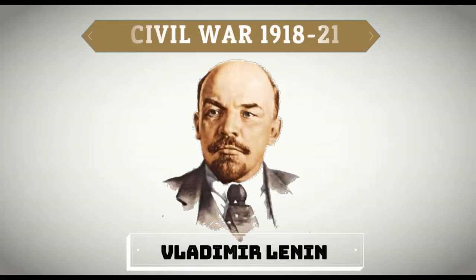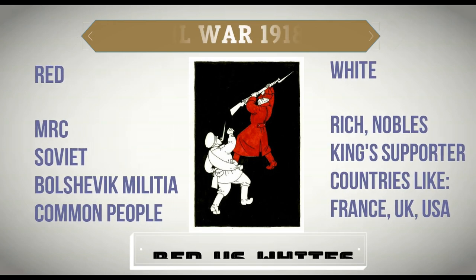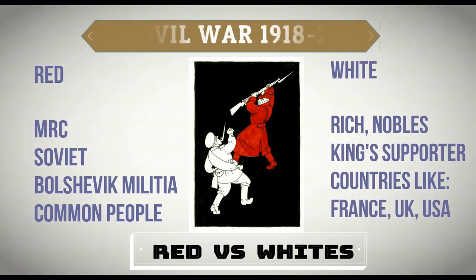Vladimir Lenin emerged as the biggest leader of Russia after the Russian Revolution, and he had so many enemies. The people supporting Lenin and the people opposing Lenin were divided into two parts. The first part is known as the White Guard and the second part is known as the Red Guard. This civil war of Russia was also known as Red versus Whites. The Reds were supported by the MRC, that is the Military Revolutionary Committee, which was a combination of the Soviets plus Bolshevik militia, and the common people.